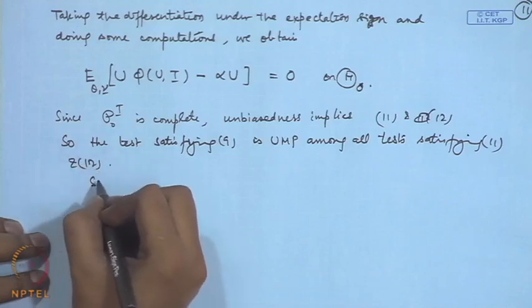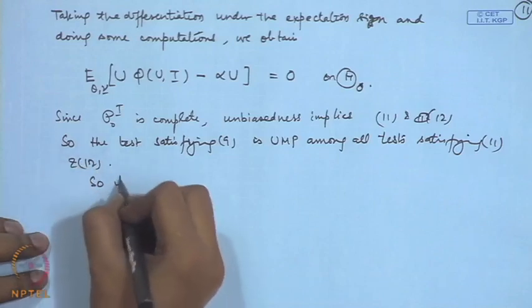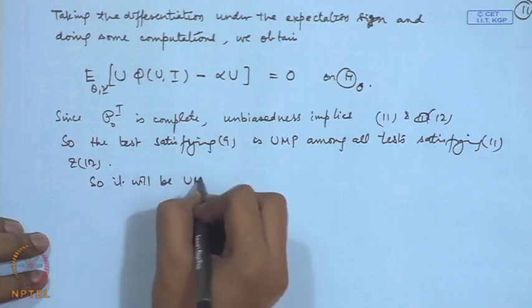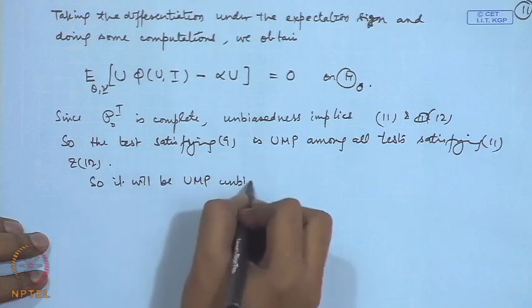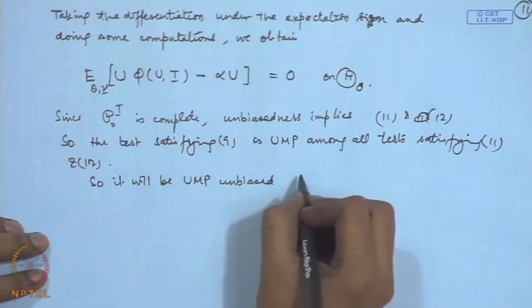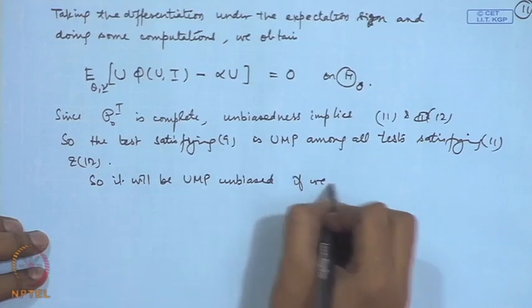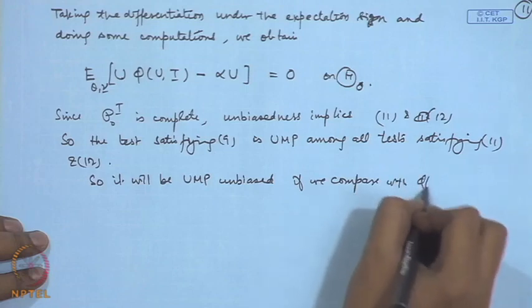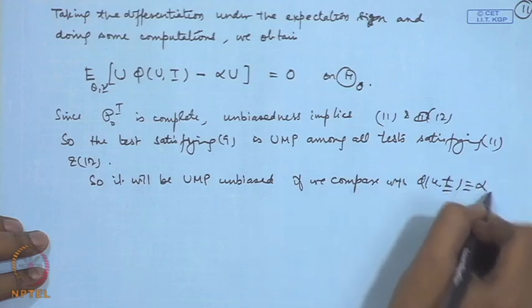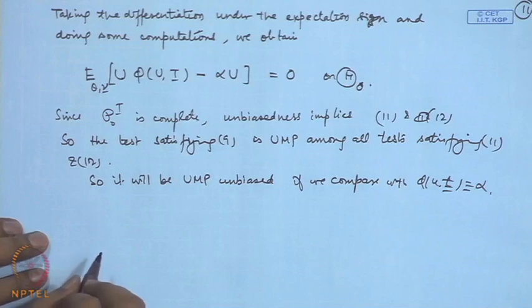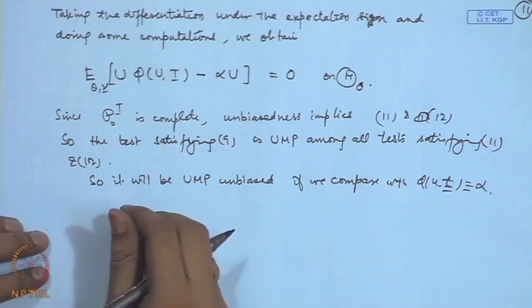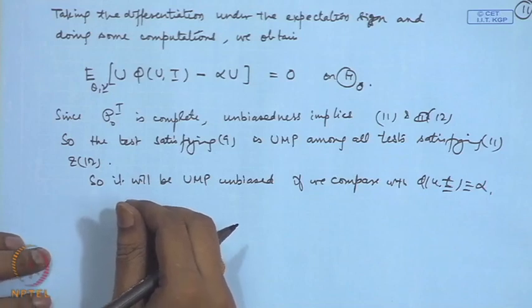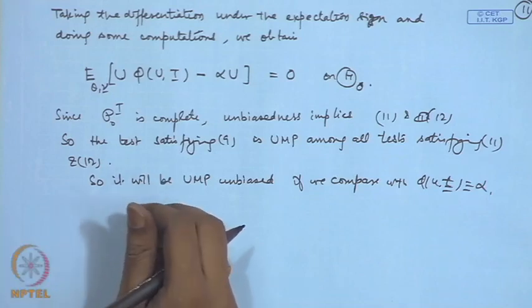So, it will be UMP unbiased if we compare with phi(u,t) is equal to alpha.